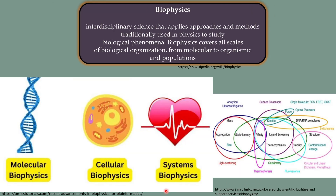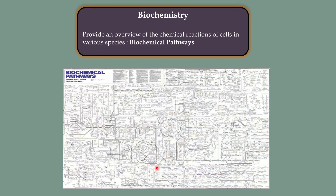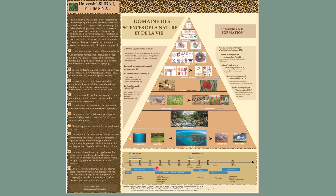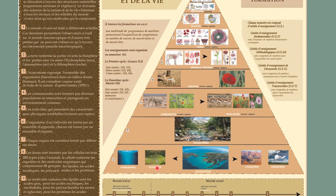The biological view defines life in terms of physical processes. In the nature and life field, we can use biophysics, which is an interdisciplinary science that applies approaches and methods traditionally used in physics to study biological phenomena from molecular to cellular to organism to populations. The biological view also defines life in terms of chemical processes, and biochemistry provides an overview of the chemical reactions of cells in various species, called biochemical pathways. You can find all this information in the accompanying poster. Thanks for watching and see you in the next video.